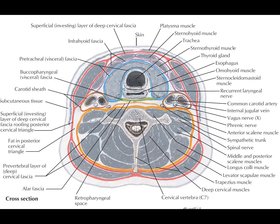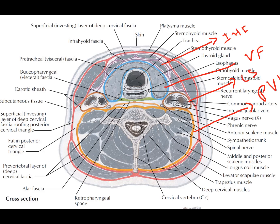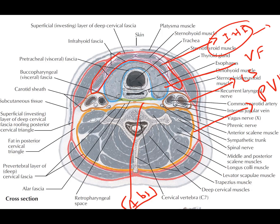The superficial layer of the deep cervical fascia covers the neck 360 degrees from anterior to posterior. Deep to this, the deep cervical fascia has multiple named layers: the visceral fascia, the infrahyoid fascia, the prevertebral fascia, the carotid sheath or carotid fascia, and the alar fascia. The infrahyoid fascia covers all the infrahyoid strap muscles.